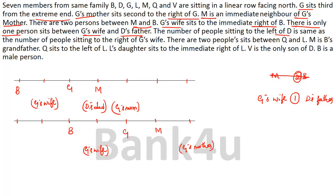Next: the number of people sitting to the left of D is the same as the number sitting to the right of G's wife. G's wife is placed — counting to the right of G's wife gives five persons in one case, so D must have five persons to the left, placing D at the rightmost position. In the second sub-case, three persons are to the right of G's wife, so three persons must be to the left of D, placing D at position four. D is now fixed.